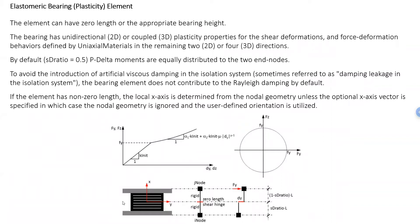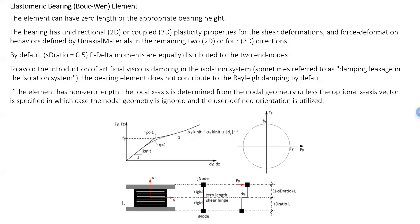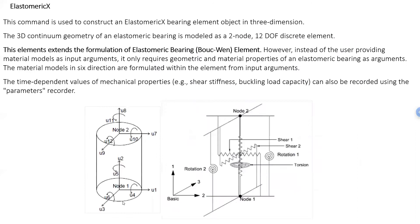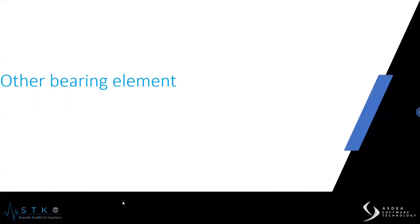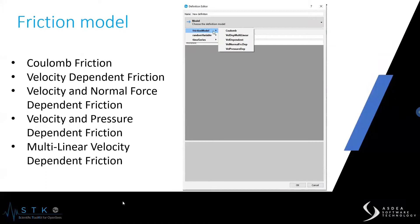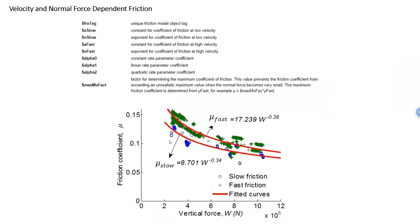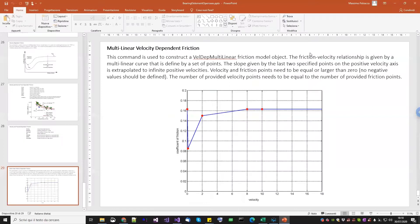In this presentation, you will have a brief recap of all the main features of the isolator elements — the elastomeric bearing elements, the friction pendulums, and those specialized other bearing elements. In this case, we are going to test only one. Some of them, particularly the friction pendulum ones, need not only the element property but also the friction model. The friction model in STKO can be found under the definition, where you also define the time series. This will not be the topic of today's webinar — in the case study we are going to use the elastomeric bearings, so we don't need the friction model.